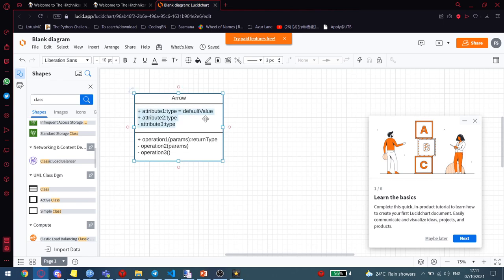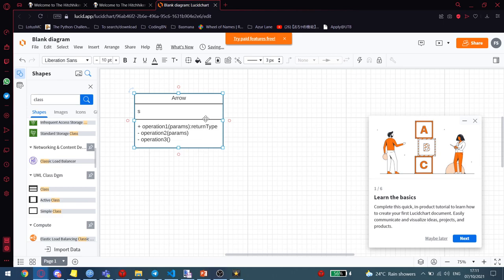For the attributes, we know we need a starting position. So the tip's coordinate or the tail's coordinate. Let's start with the tail. Tail coordinates. The type will be a Euclidean coordinate, so that's a double-double. Or in Java, let's use a double array size 2.